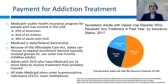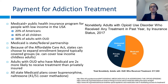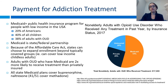I wanted to briefly talk about payment for addiction treatments. Medicaid is the public health insurance program for people with low income in the United States. It covers about 20% of Americans, 40% of those under the age of 18, and about 38% of individuals with opioid use disorder. Because of the Affordable Care Act, states can choose to expand enrollment to cover low-income childless adults. Medicaid is really important for addiction coverage because adults with opioid use disorder who have Medicaid are twice as likely to receive treatment compared to those that are privately insured, and over half of adults with opioid use disorder who receive any treatment in the last year are covered by Medicaid. Medicaid currently covers buprenorphine and naltrexone in every state, but only methadone in about four-fifths of states.